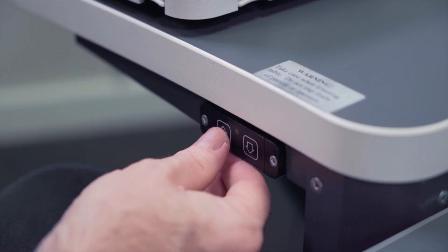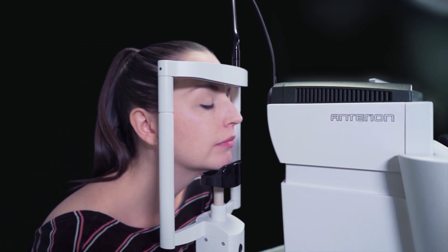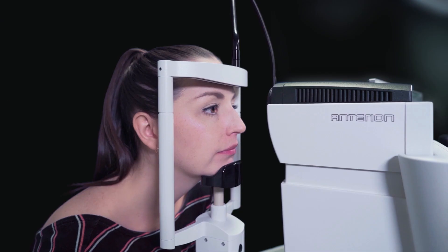You can adjust the height of the table for the patient. Adjust the chin rest to align the patient's eyes with the marks on the headrest column.